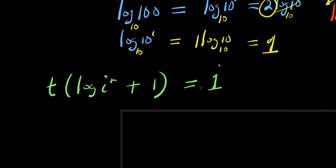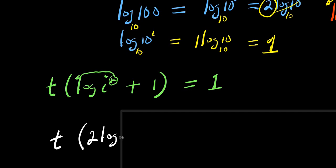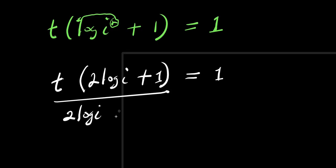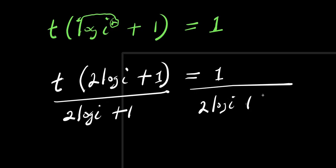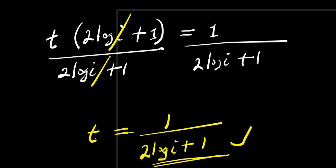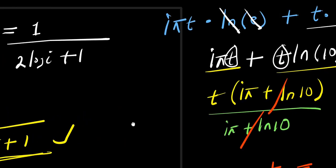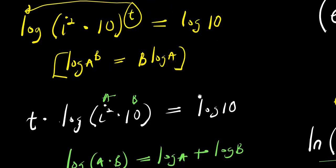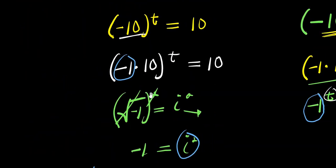Now, remember the same identity — the 2 here will come behind the log. So what you are going to have is t times 2 log i plus 1, equals 1. Dividing both sides by 2 log i plus 1, this cancels, and we have t equals 1 divided by 2 times log i plus 1. This becomes our answer using this technique. The two answers are correct and will give you the same thing if you type them into your calculator. That's how you can solve this exponential problem and find the value of t. See you again, thank you and goodbye.